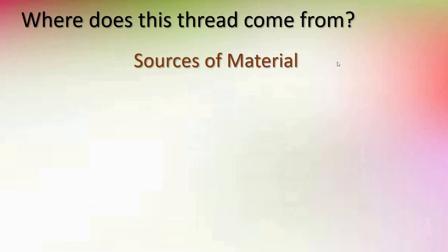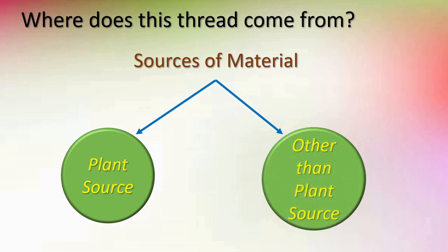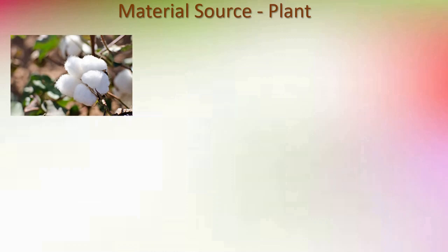Where does this thread come from? Cloths are made by interweaving the threads or yarns. But from where does this thread come? There are two different types of sources from where we get the material for the cloth. Number one is plant source — that is the material we get from the plant. And second is the material we get from sources other than plants. We will study about both these sources one by one.